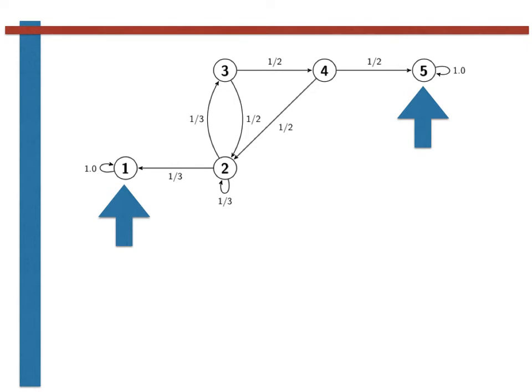States 2, 3 and 4 are transient. It is guaranteed at some point in the future we will stop visiting states 2, 3 and 4.